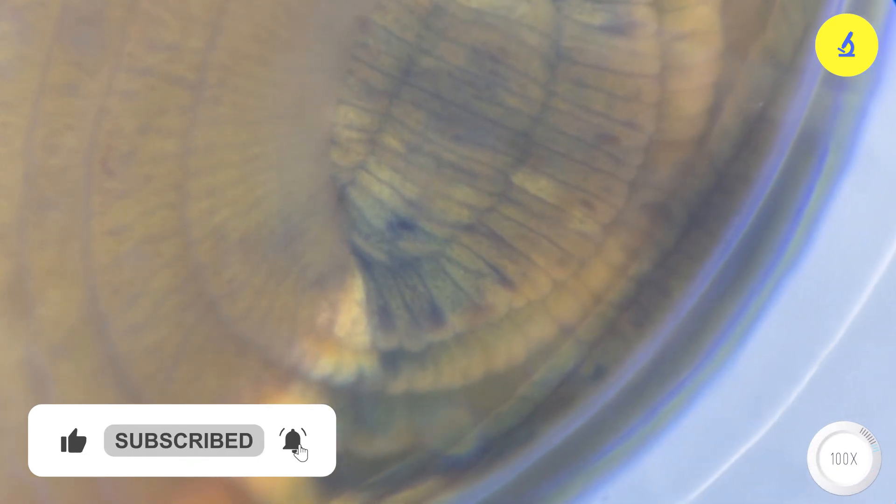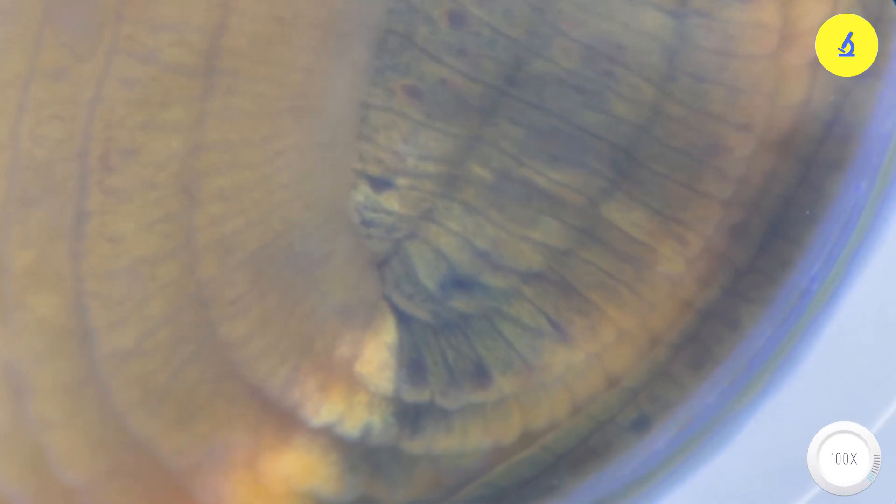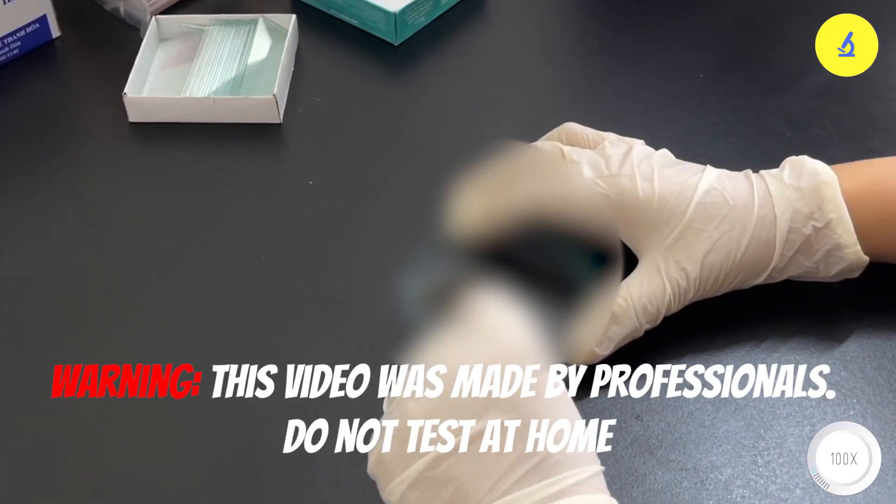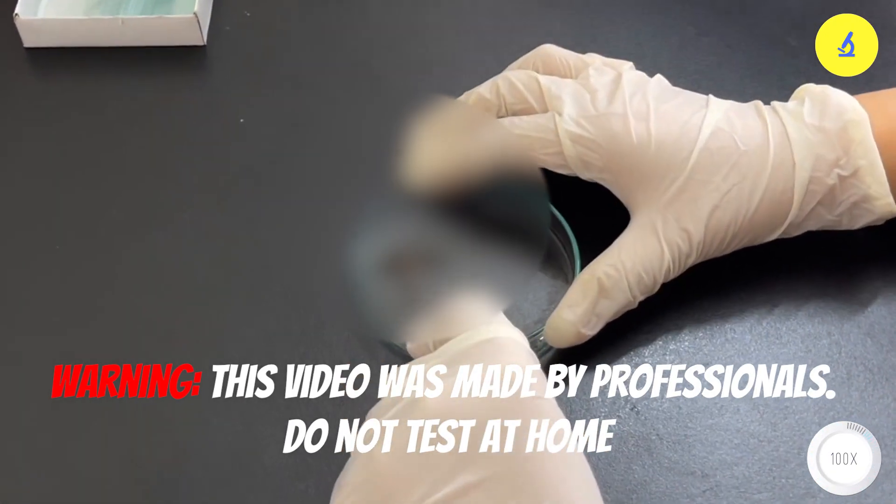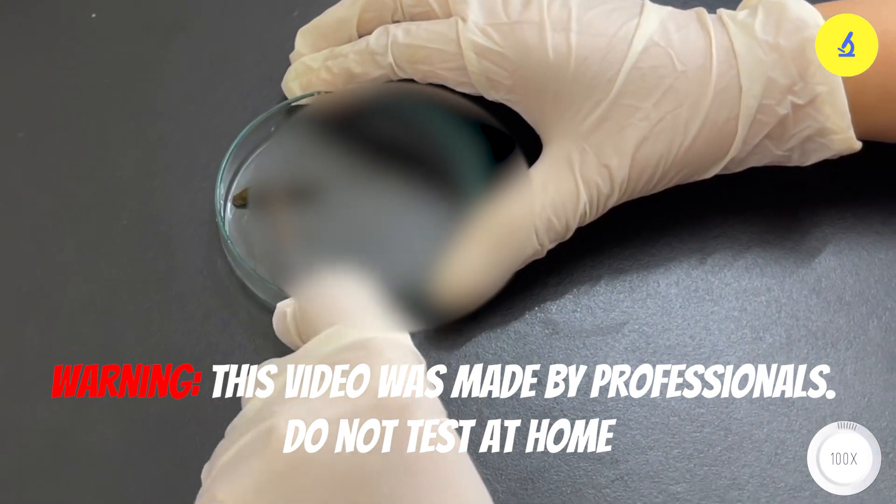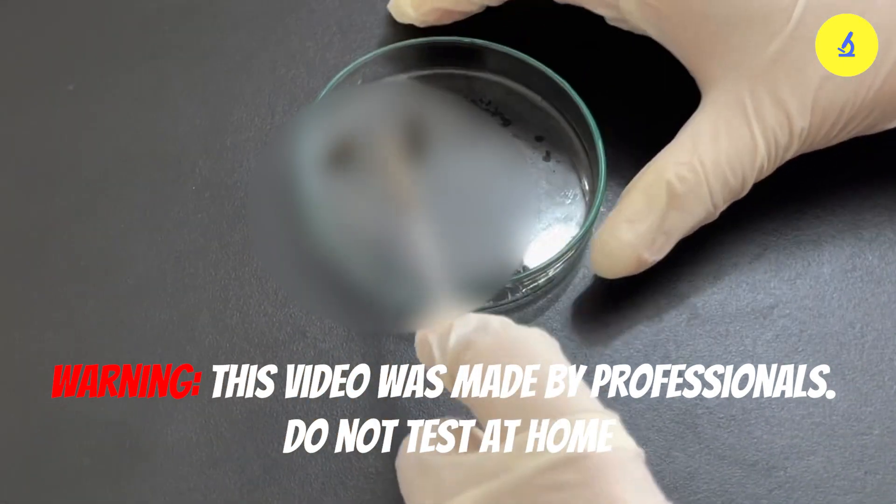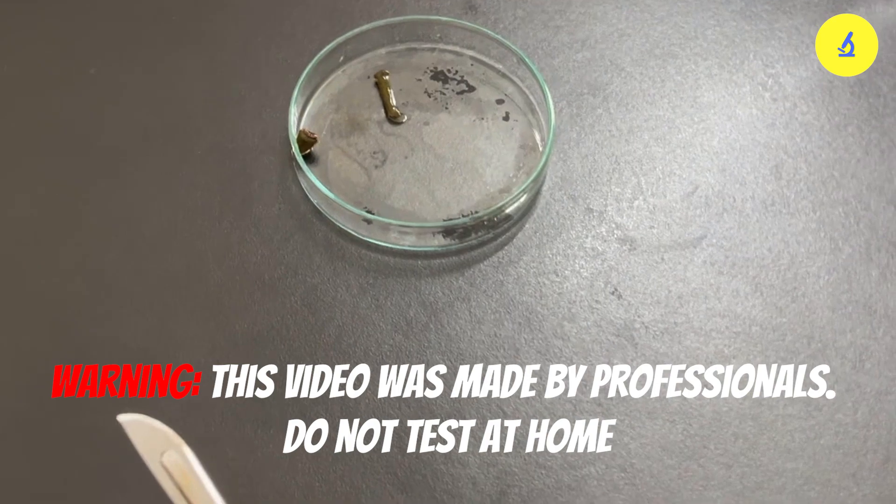Leeches are considered demonic creatures because each segment of the leech has the ability to regenerate and form a new individual when cut in half. For example, if we cut a leech in half horizontally like this, one leech will become two leeches. That's why it's called a demonic creature. It sounds like a horror movie. Hey, it's still wriggling around. Oh no. If it jumps and lands on me, I might faint.